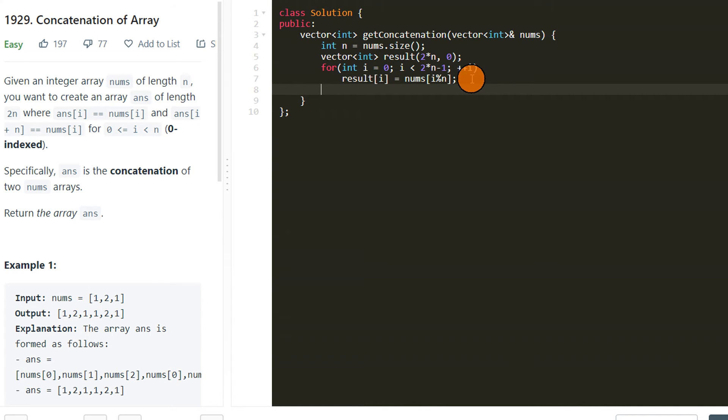We could have also run a loop from 0 to n minus 1, and then for each value of i we could have populated two values: result[i] and result[i + n]. We will see that also.